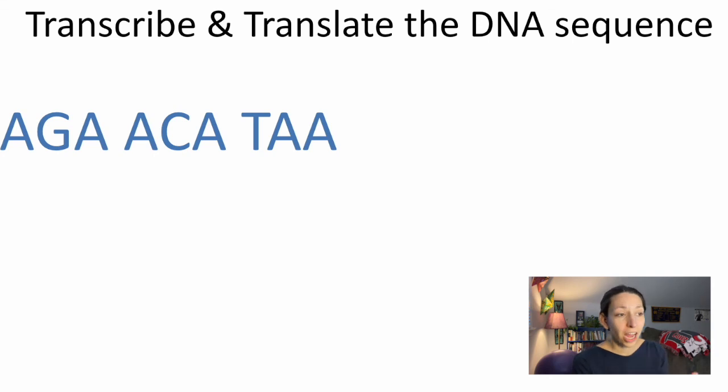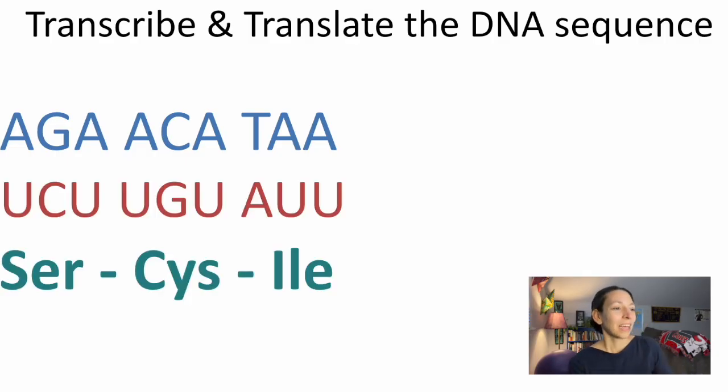Final step here. We're going to transcribe and translate this. So start with your DNA sequence. Tell me what the mRNA would be that is built off this DNA sequence and then what the amino acids would be from that mRNA. Make sure you pause. You ready? The mRNA would be UCUUGUAUU. And then our amino acid sequence would be SER-CYS and ILE if we're going by the abbreviations. Serine, cysteine, and isoleucine.